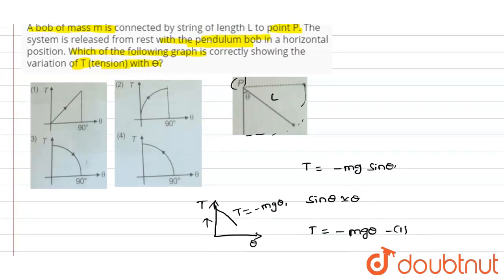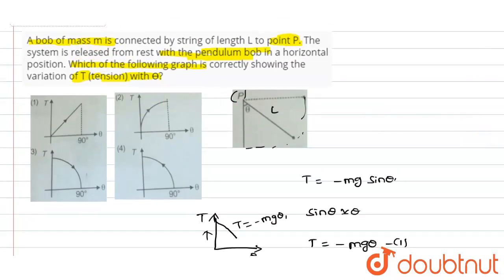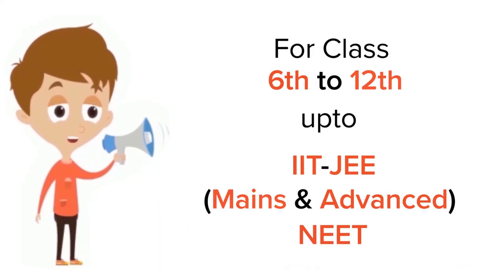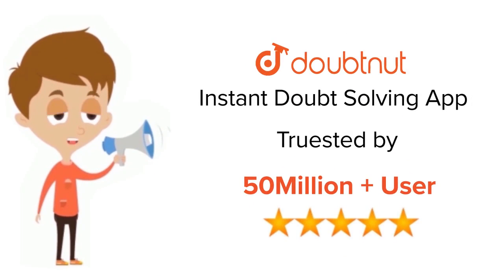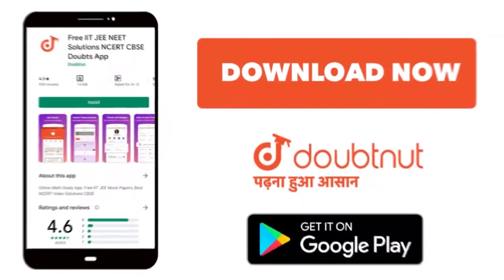Out of these four options, if you see we have option three. In option three, the tension versus theta graph is coming from the upper side coming down, so option three is the correct answer for this question. Thank you. For class 6th to 12th, IIT-JEE and NEET level, trusted by more than 5 crore students, download Doubtnut app today.